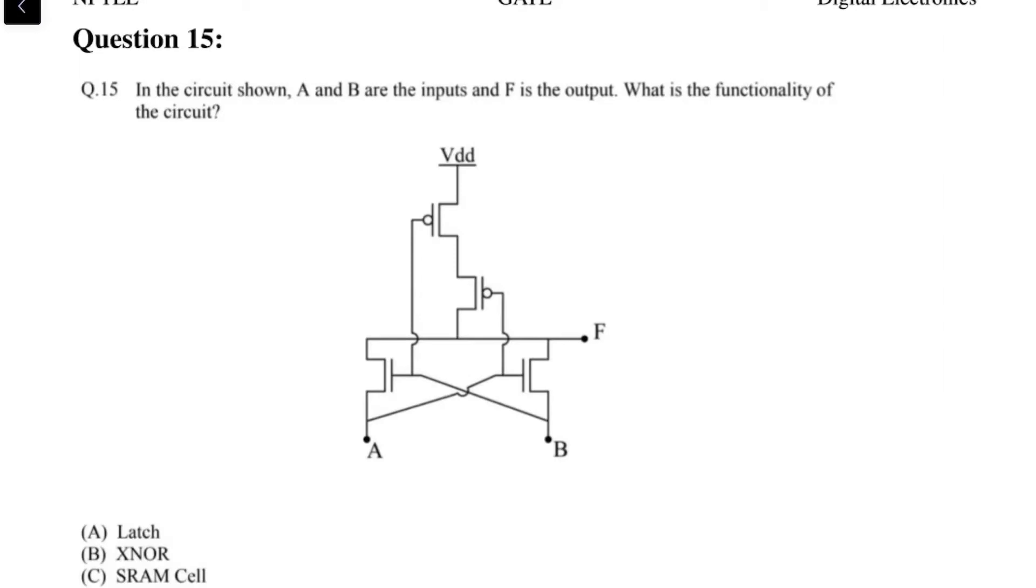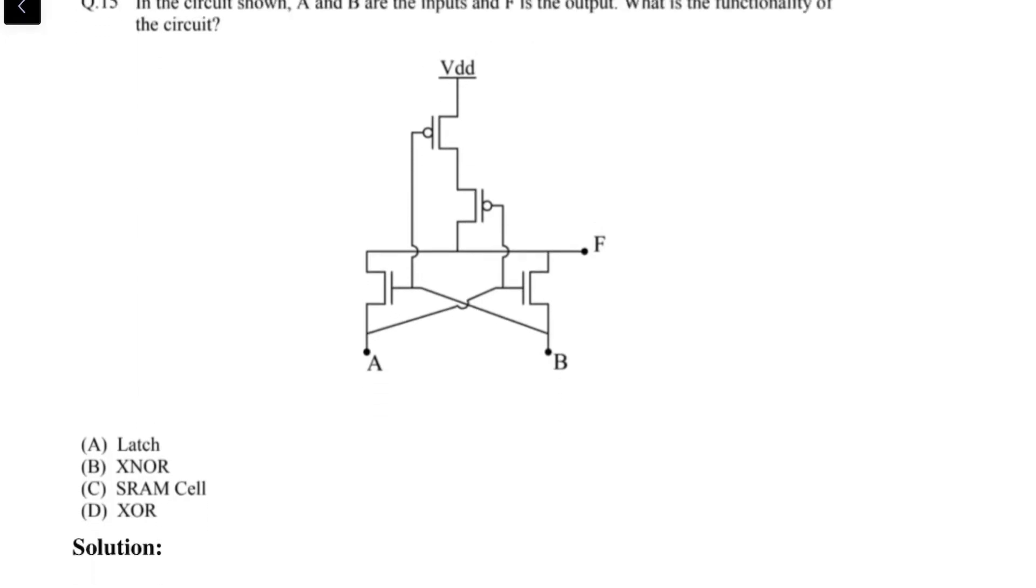Let us look at forming the truth table for this circuit. When you give zero-zero as input, the PMOSes both get zero and the NMOSes also both get zero, which means that the output F, because the PMOSes are both turned on at logic zero, will be at VDD. NMOSes are both off because NMOS turns off for logic zero.